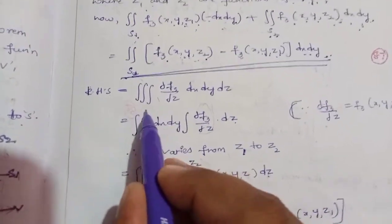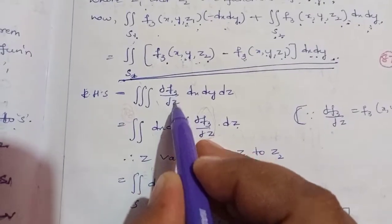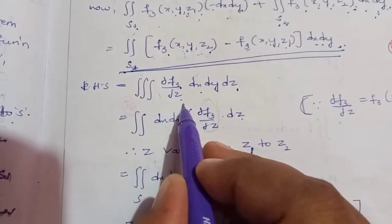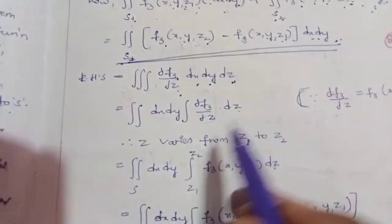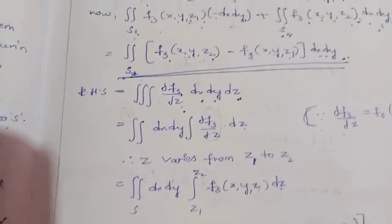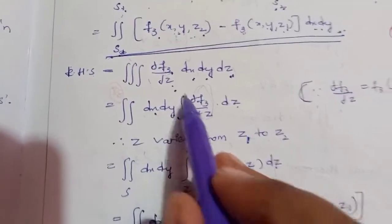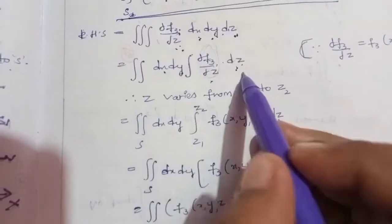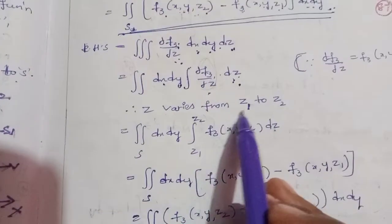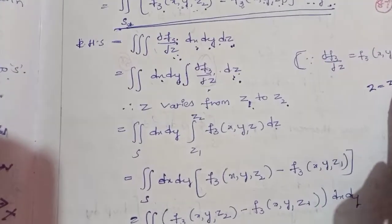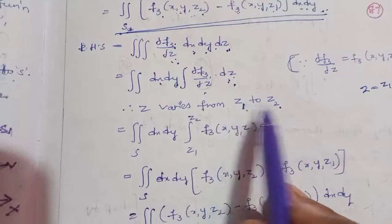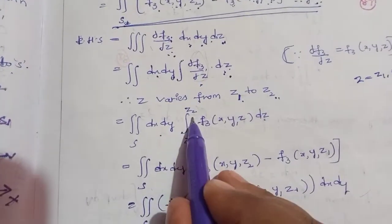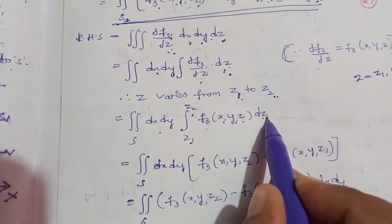The RHS is the volume integral of dF3/dz dx dy dz. Integrating dF3/dz with respect to z from z1 to z2 gives F3(x,y,z2) minus F3(x,y,z1). So the surface integral over R of [F3(x,y,z2) minus F3(x,y,z1)] dx dy equals the volume integral of dF3/dz dx dy dz. Therefore LHS equals RHS.